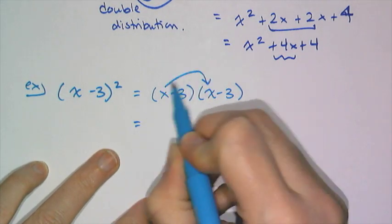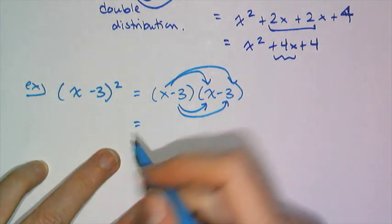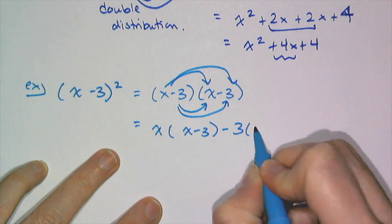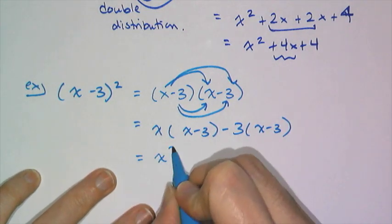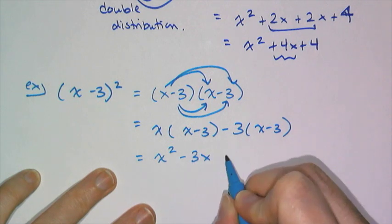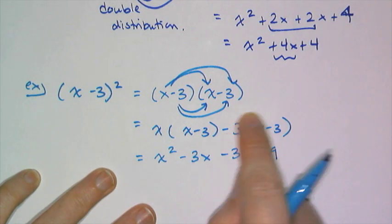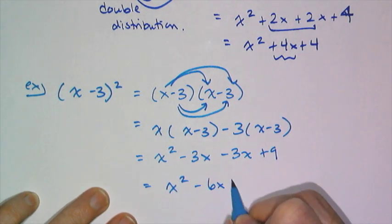Then I can do my distribution. I'm going to distribute x and then I'm going to distribute -3. So it's x times (x-3) minus 3 times (x-3). So now I actually do my distributions: I get x² minus 3x minus 3x plus 9, being careful with distributing the negative of course, and so I get x² minus 6x plus 9.